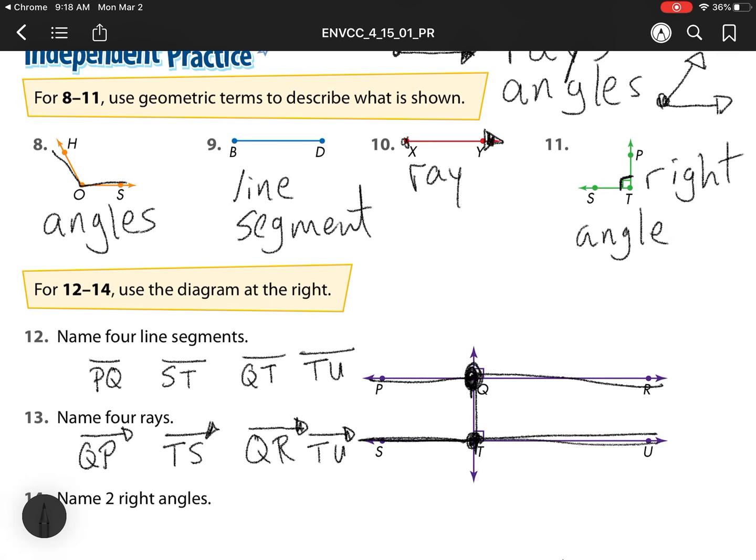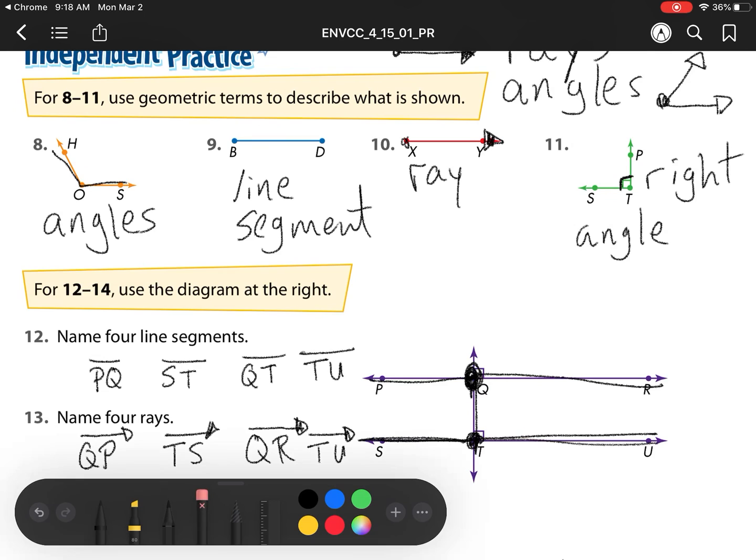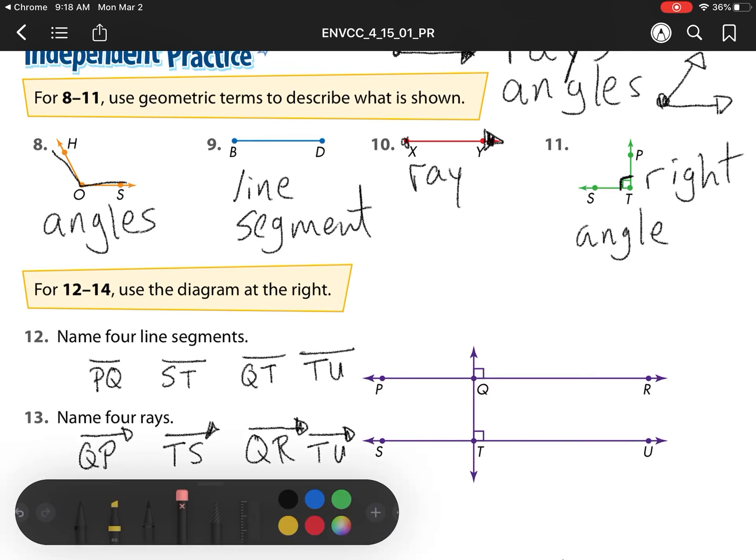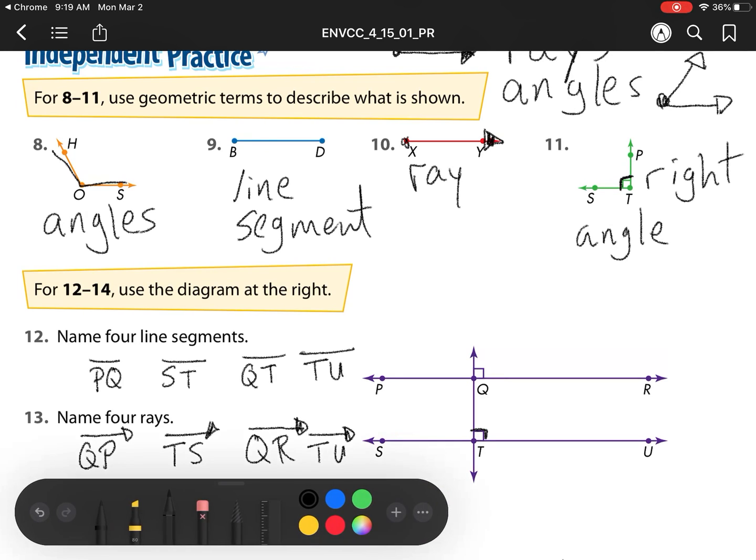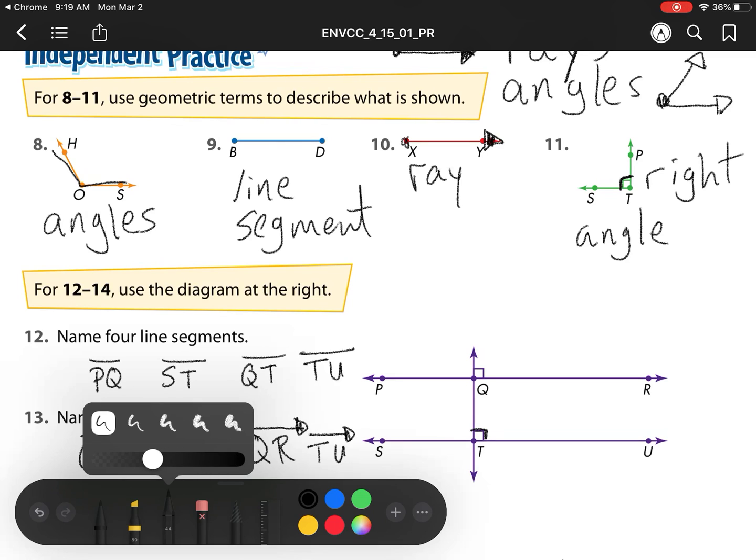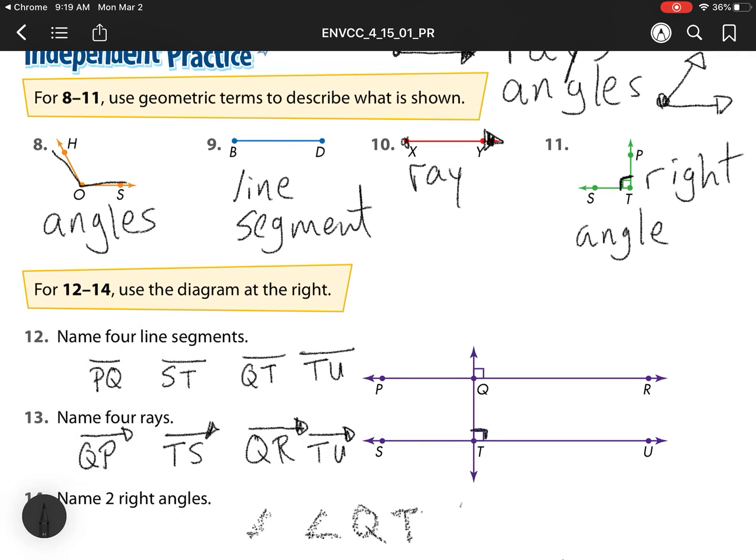Name two right angles. I just drew all over this thing, so I'm going to erase it so it's clear for us. Two right angles. Remember, wherever I see this box, that is a right angle. So I start with the angle sign, and my angle is Q because I start at Q, then to T, and then to U. So angle QTU.